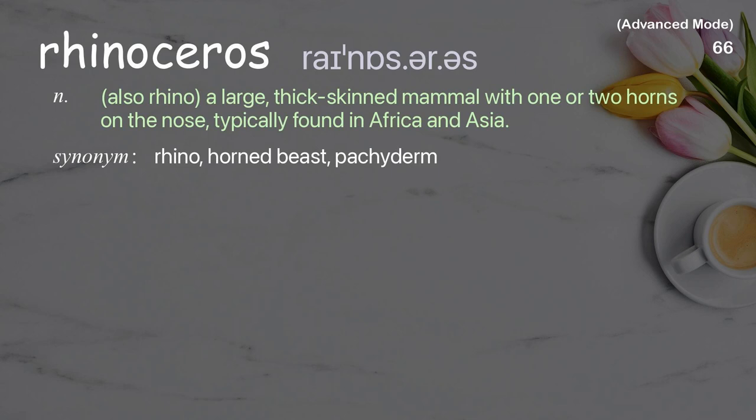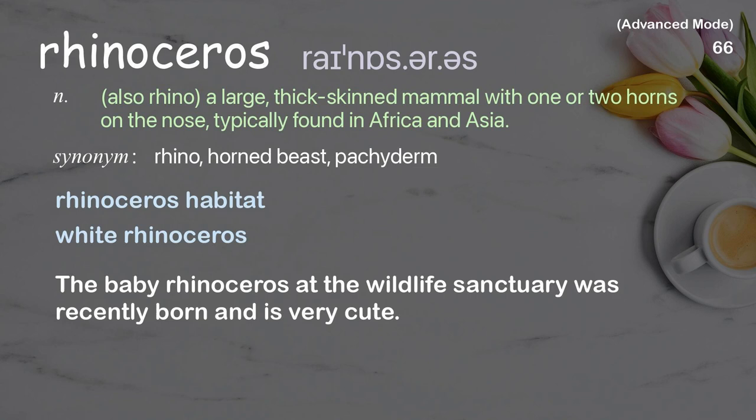Rhinoceros (also rhino): A large, thick-skinned mammal with one or two horns on the nose, typically found in Africa and Asia. Examples: Rhinoceros habitat, White rhinoceros. The baby rhinoceros at the wildlife sanctuary was recently born and is very cute.